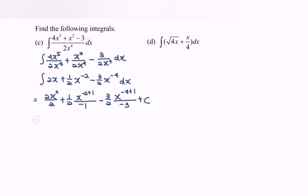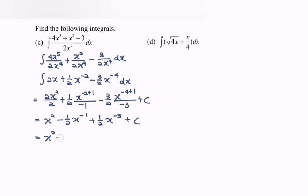Rewrite the situation and we will have x squared minus 1 over 2 x to the power of negative 1, plus 1 over 2 x to the power of negative 3, plus c. Finally, we obtain x squared minus 1 over 2x, plus 1 over 2 multiplied with x cubed, plus c.